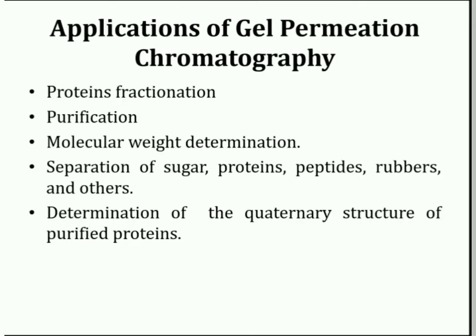Applications of gel permeation chromatography: it is used for the fractionation of proteins, which is a process of series of processes intended to isolate a single or multiple type of protein from a complex mixture. It is also used for the purification of components, determination of molecular weight, and separation of sugars, proteins, peptides, rubbers, and others on the basis of their size. It can also be used for the determination of quaternary structure of purified proteins.